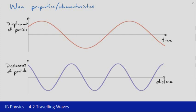As we go through, I'm going to notate what the particular properties, characteristics, or quantities are that we need to be aware of, and then we'll describe them in more detail underneath the graphs. The first quantity is amplitude, which has the symbol capital A. You'll notice that on both graphs they have the same amplitude because they're representing the same wave.